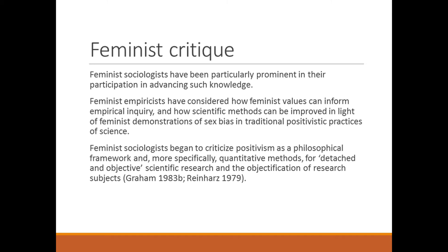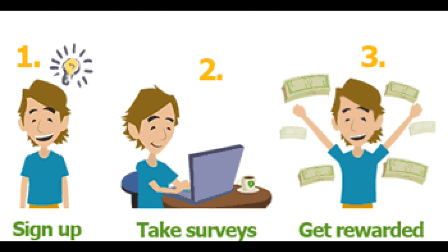Feminist sociologists have been particularly prominent in advancing knowledge. Feminist empiricists have considered how feminist values can inform empirical inquiry and how the scientific method can be improved in light of feminist demonstrations of sex bias in traditional positivistic practices. Feminist sociologists began to criticize positivism as a philosophical framework, and more specifically quantitative methods, for their detached and objective approach and the objectification of research subjects. We'll get to how they look at research subjects in terms of power and this idea of being detached and objective when we look at reflexivity.